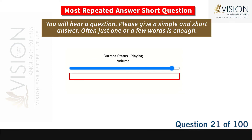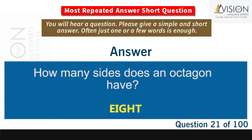How many sides does an octagon have? Eight.